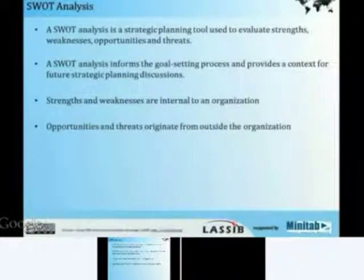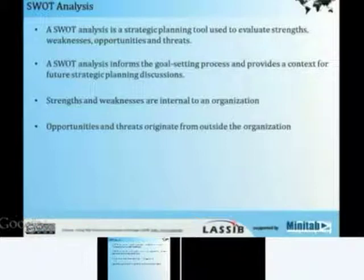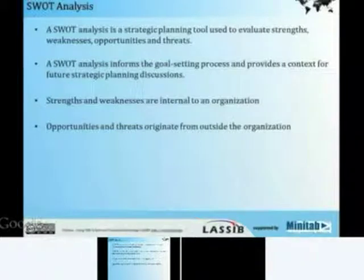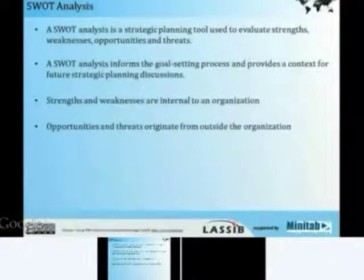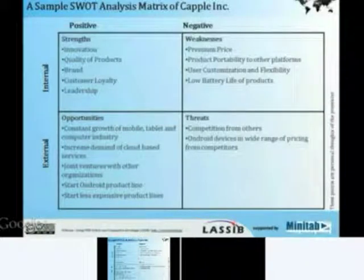Strengths and weaknesses are internal to your organisation — they could be within your processes, people, technology or partners. Opportunities and threats originate outside the organisation. There could be opportunities in the market or opportunities to make a better product than your competition. Threats are external — for example, strikes or government rules which could impact your organisation negatively. Now let us look at a hypothetical SWOT analysis matrix created for one of the leading technological organisations in the world — we would like to call it Capital.